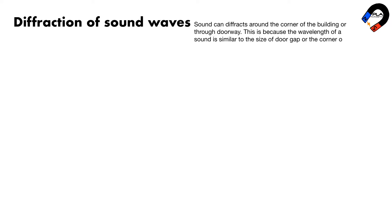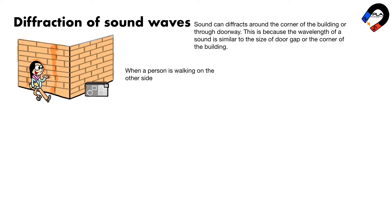The diffraction of sound. Sound can diffracts around the corner of the building or through doorway. This is because the wavelength of a sound is similar to the size of door gap or the corner of the building. When a person is walking on the other side of building, he can hear the sound from the radio because the sound from the radio diffracts around the corner of the building.